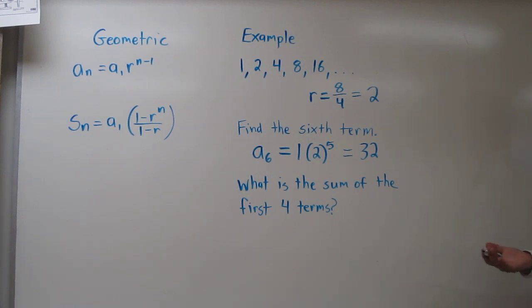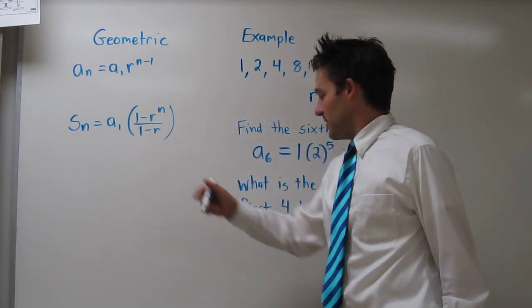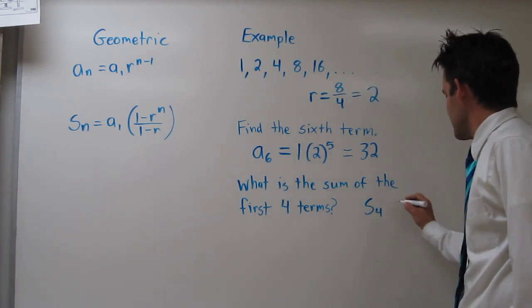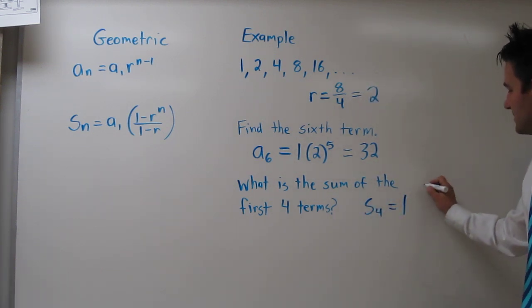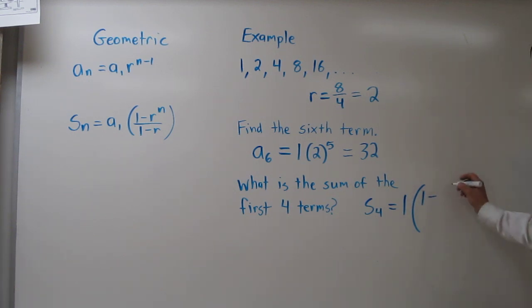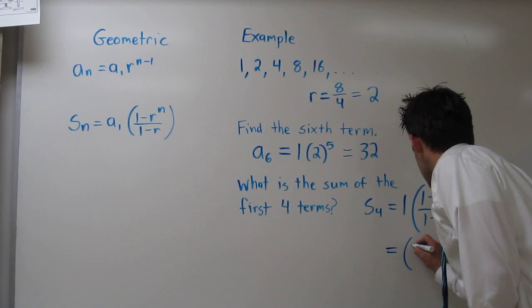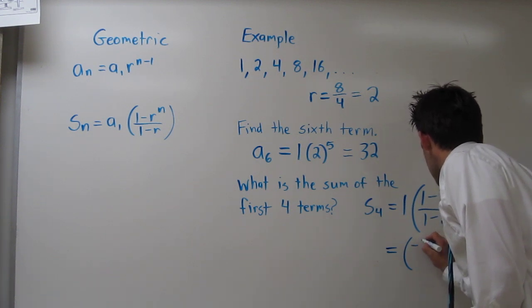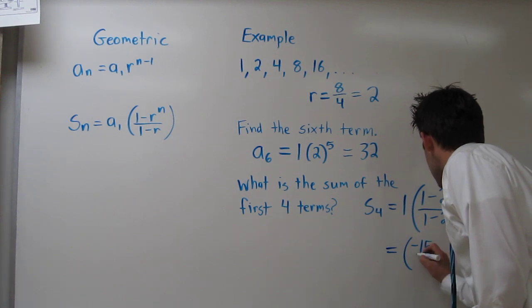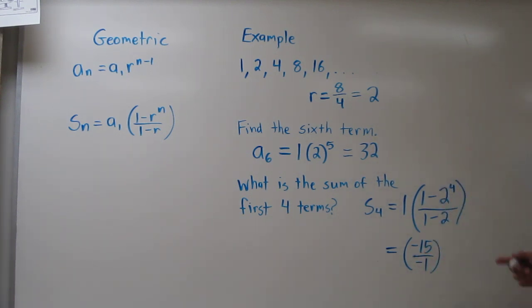Now what is the sum of the first four terms? We have to use this formula. So the sum of the first four terms equals 1 times 1 minus our r, again 2 to the fourth power, because our n is 4 this time, all over 1 minus 2. So let's simplify that and see what we get. Negative 15 over negative 1, which is just 15.